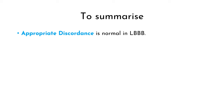And this ECG — does it fulfill Sgarbossa Criteria? There is no concordant ST elevation, neither is there concordant ST depression in V1 to V3. However, there is excessively discordant ST elevation in lead 3 and AVF. In lead 3, it is excessively discordant by around 30%, whereas in AVF, it is excessively discordant by around 37%. There is no other excessive discordance anywhere on the ECG. Since criteria three is fulfilled, the ECG is Sgarbossa positive.